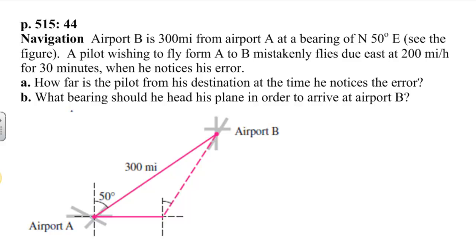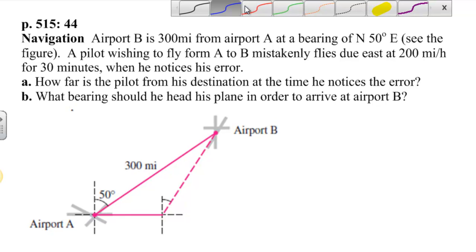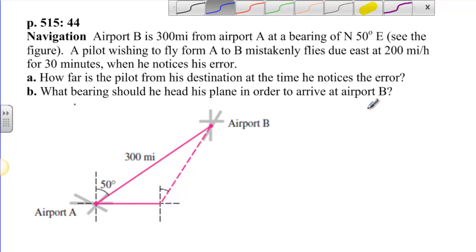So, the first thing that we know is that this pilot flew due east at 200 miles per hour for 30 minutes. Now, if he flew at 200 miles per hour for 30 minutes, that's half an hour times 200 miles per hour. That's only 100 miles. So, this distance right here is 100 miles.